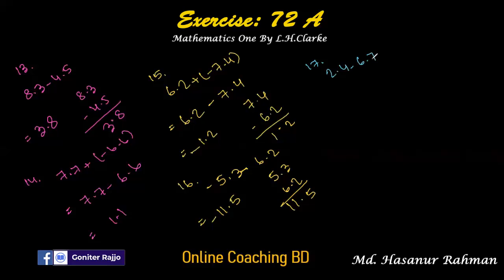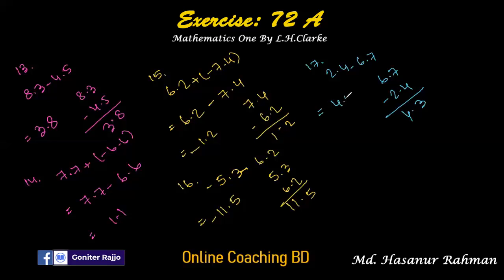Number seventeen: 2.4 minus 6.7. We subtract 2.4 from 6.7: 7 minus 4 is 3, 6 minus 2 is 4, so the answer is 4.3. The sign of the larger number is negative, so the answer is minus 4.3.